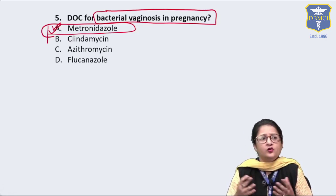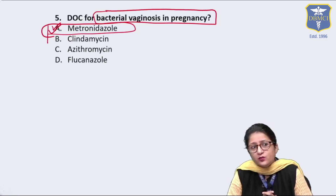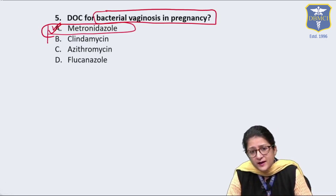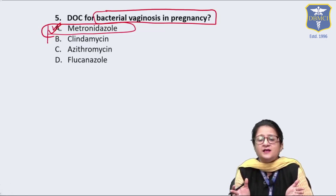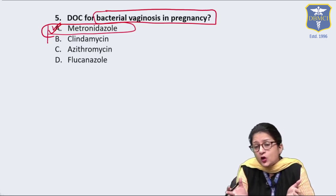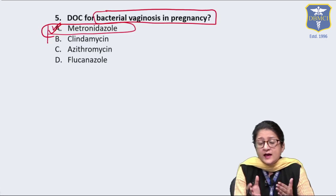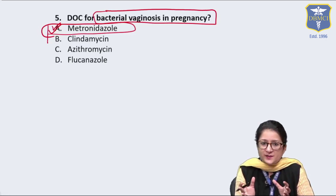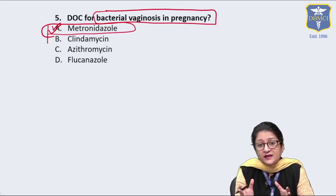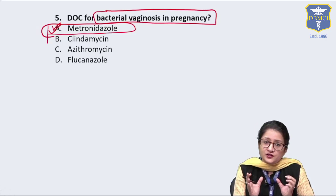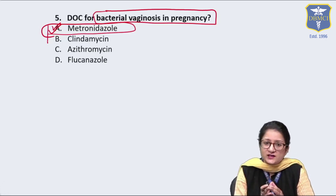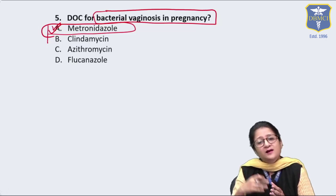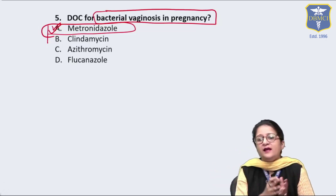In the first trimester, which carries the highest risk of teratogenesis, the difference is not in which drug is used but in the route of administration. In the first trimester, we prefer giving metronidazole by the vaginal route rather than orally. We have vaginal gels and pessaries of metronidazole available for this purpose.